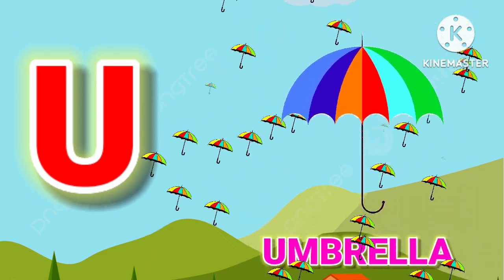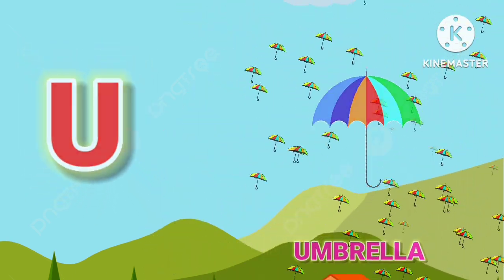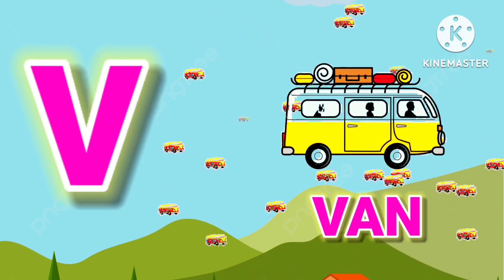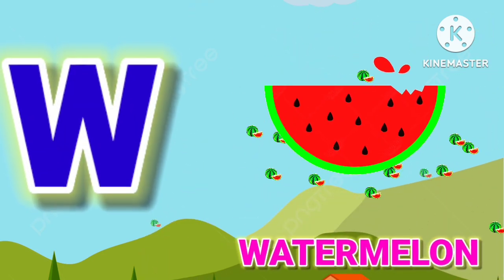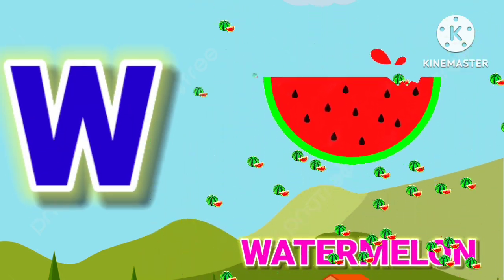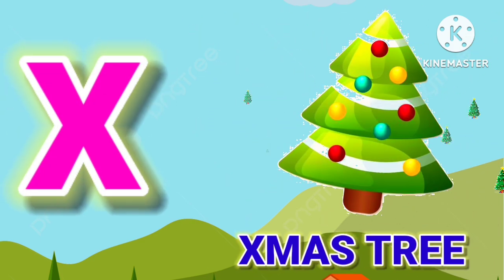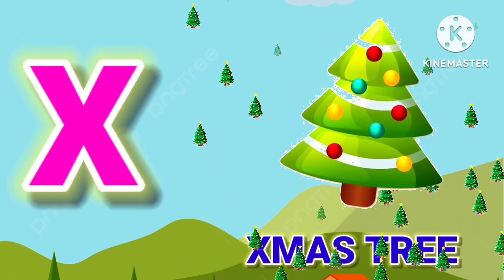U for umbrella, V for van, W for watermelon, X for x mystery.